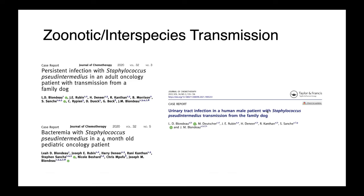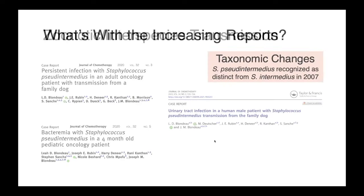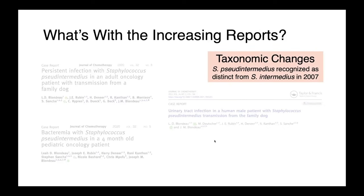We've been able to publish a number of case reports looking at oncology patients — a pediatric patient and a man who had a urinary tract infection — all of which demonstrated transmission from the dog. So why are we seeing increasing reports of human infections with staph pseudintermedius if it's really not very likely or very common? There are a few reasons. One is that we've had taxonomic changes — staph pseudintermedius was recognized as distinct from staph intermedius in 2007, so it's a newly identified species.